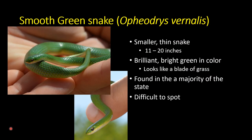The next species is the smooth green snake, Opheodrys vernalis. This is a very small, thin snake — about 11 to 20 inches long. It's a brilliant bright green snake with a white to yellowish belly, and it looks like a blade of grass. In fact, when hunting it will sort of shake its head and move like a blade of grass blowing in the wind. These are very difficult to spot — they're small, fast, and perfectly camouflaged — but they are found throughout a majority of the state. They're fascinating little snakes that lay eggs and eat invertebrates.